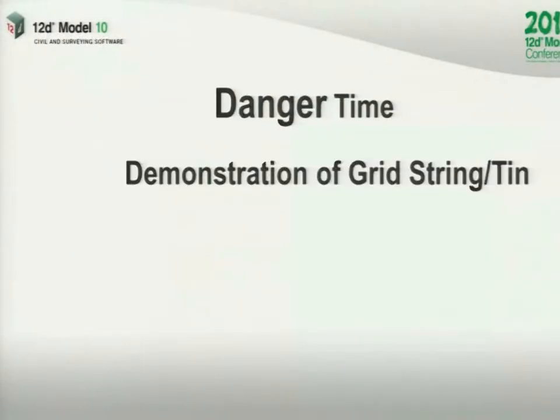If you're trying to do a design where you want very accurate modelling, you don't use this sort of stuff. Who wants a grid that's down to a millimetre in size? You get so much data that it outweighs the benefits. But for a lot of other data — for coarse terrains and things like that — this is more than accurate and speeds things up for you. Alan is now going to demonstrate a grid string and a grid TIN to show you how easy it is.